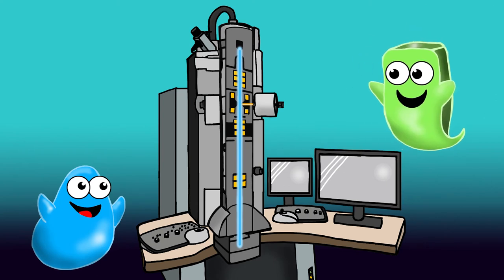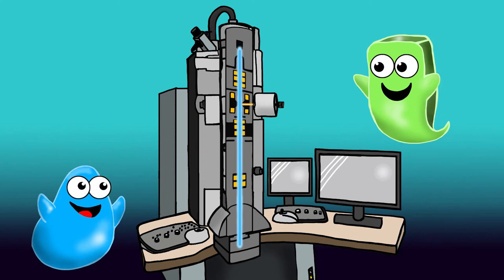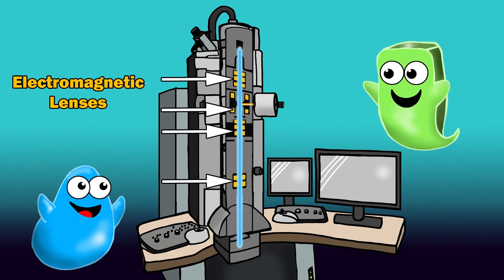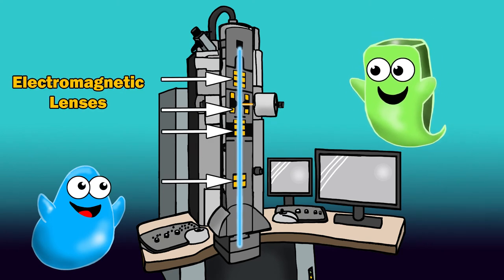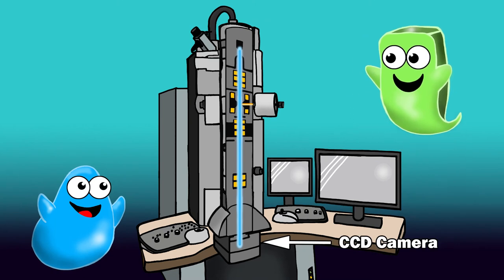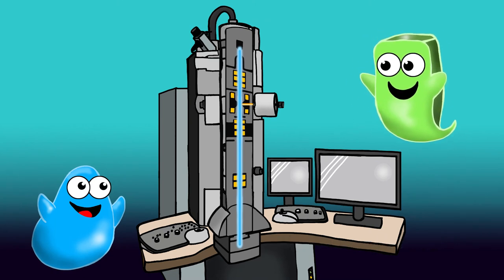Unlike light microscopes that use glass lenses, electron microscopes use electromagnets to form and magnify an image. This magnified image hits a camera located all the way under the column, and an image appears on the computer monitor.